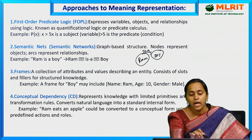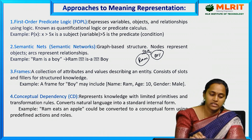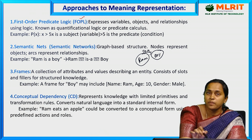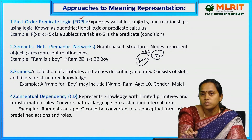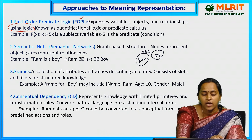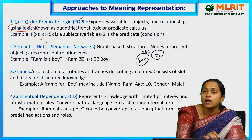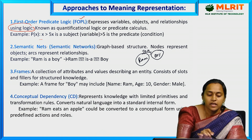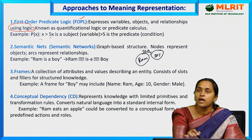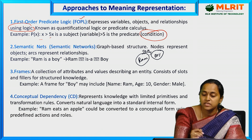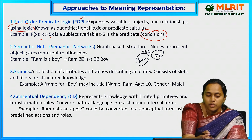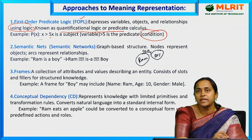These are why meaning representation is important. The approaches to meaning representation include: first, FOPL — First Order Predicate Logic — which expresses variables, objects, and relationships between words using logic. Here, P(X) where X is the subject and P(X) is the predicate with a condition. It is known as quantificational logic or predicate calculus.